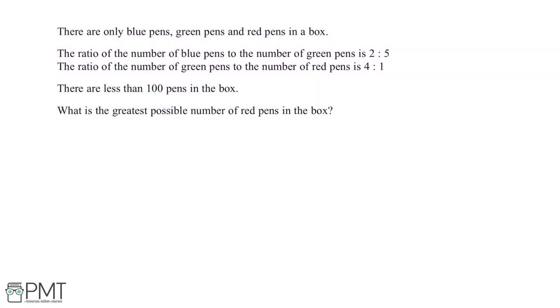There are only blue pens, green pens and red pens in a box. The ratio of the number of blue pens to the number of green pens is 2 to 5. The ratio of the number of green pens to the number of red pens is 4 to 1. There are less than 100 pens in the box. Work out the greatest possible number of red pens in the box.